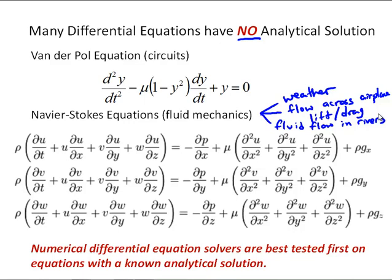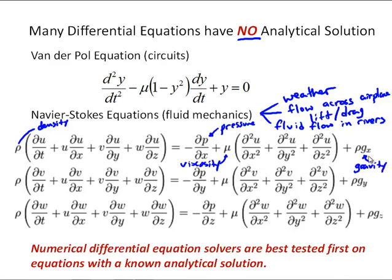The Navier-Stokes equations have wide application. To give a brief overview: rho is the density; u, v, and w are the x, y, and z components of the fluid velocity respectively; p is the pressure; mu is the viscosity; g is the acceleration due to gravity. The reason we potentially have three components of g is because the x, y, z coordinate system for applying these equations may not line up with the typical z direction going up from the Earth's surface.